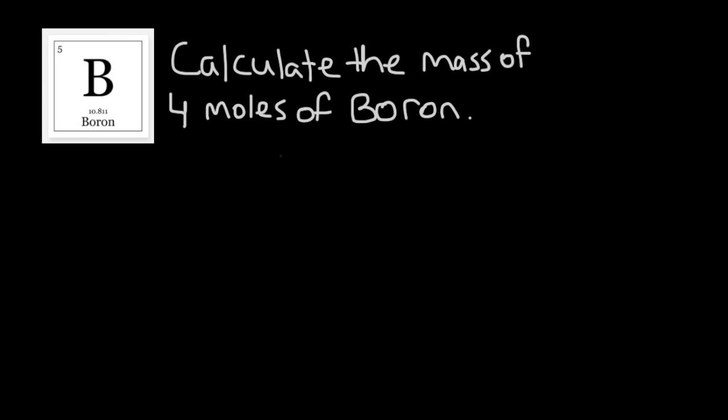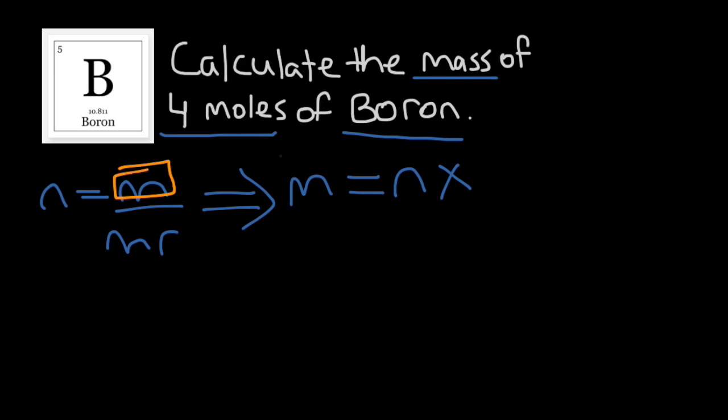Instead of finding the number of moles, what we want to do is find the mass. In this question, we're given the number of moles, and we're given the element. Rather than using this formula, our N equals M over MR, instead, we want to rearrange it so that we solve for M. So, M equals N times MR will be the formula that we use in this question.